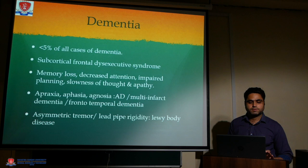Dementia is the third feature, occurring in less than 5% of all cases. It is a subcortical frontal dysexecutive syndrome with memory loss, decreased attention, impaired planning, slowness of thought, and apathy. Apraxia, aphasia, and agnosia occur more typically in Alzheimer's disease and multi-infarct dementia. Frontotemporal dementia and asymmetric tremors with rigidity occur in Lewy body disease dementia.